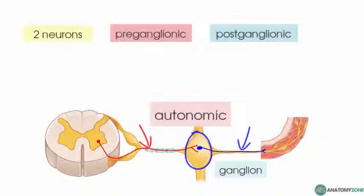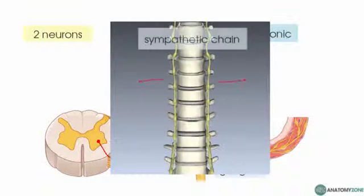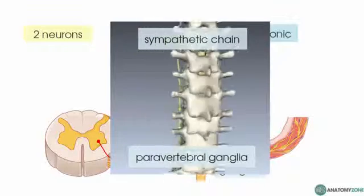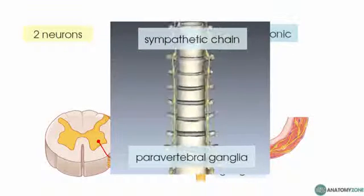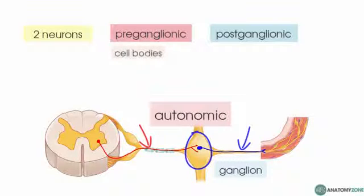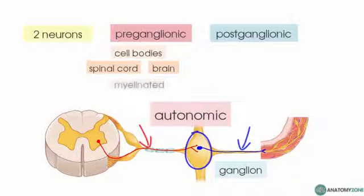The location of this ganglion may be in the sympathetic chain — the paravertebral ganglia — in the case of the sympathetic nervous system, or in the case of the parasympathetic nervous system, most ganglia are located either in or near to the target organs. The cell bodies of the pre-ganglionic neuron are located either in the spinal cord or in the brain, and the axons of these pre-ganglionic neurons are myelinated, whereas the post-ganglionic neurons are not myelinated.